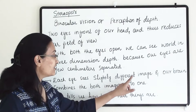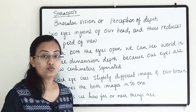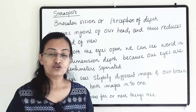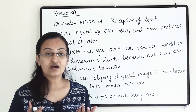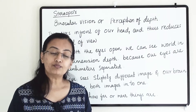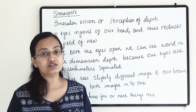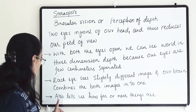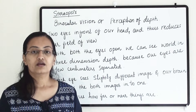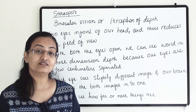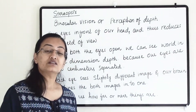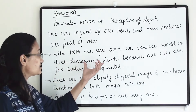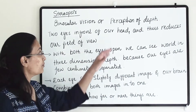Each eye sees a slightly different image and our brain combines both images into one. When we look at an object with both eyes open, both optic nerves send messages to the brain. The brain interprets the information, presents us with one combined image, and also tells us how near or far things are. This is stereopsis — our two front-facing eyes enable us to see three-dimensional depth and perceive distance.